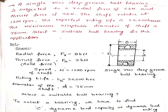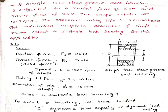Let us see the solution. The given data: radial force F_R is 8 kilo newtons; thrust force (also called axial force) F_A is 3 kilo newtons; speed n is 1200 rpm; rating life L_H is 20,000 hours; and shaft diameter d is 75 mm, which is also the bore of the bearing. Since the shaft is inserted from the bore, the bore is also 75 mm.